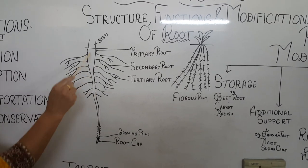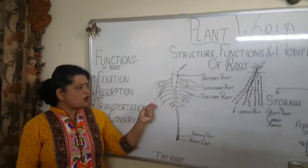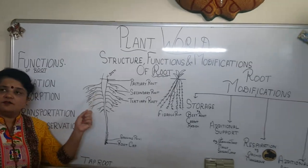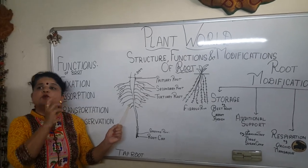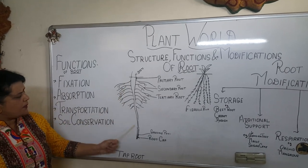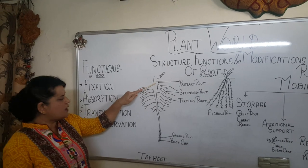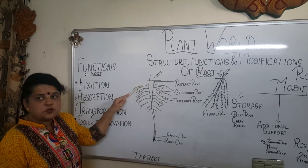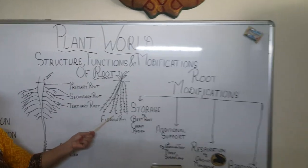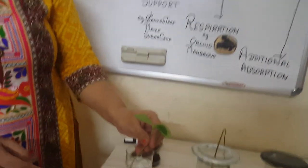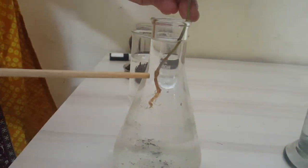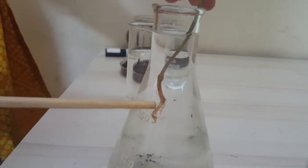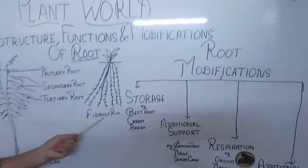Tertiary roots arise from secondary roots, secondary roots arise from the main root, and the main root arises from the radicle. This kind of root — with a very long main root — is called a tap root. It is found in dicots, meaning plants that grow from a dicot seed — a seed which you can divide into two equal halves, or two cotyledons. Tap roots are found in tall trees and go quite deep to support the plant. Here I have a specimen showing the tap root with secondary and tertiary roots arising from it.